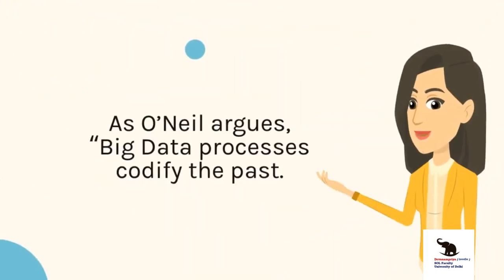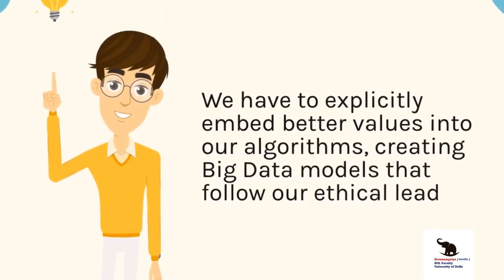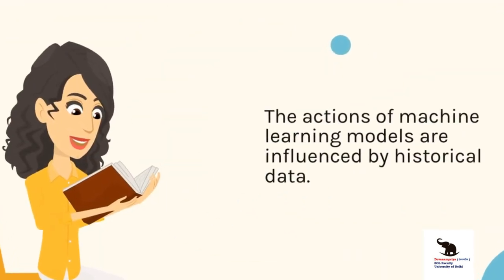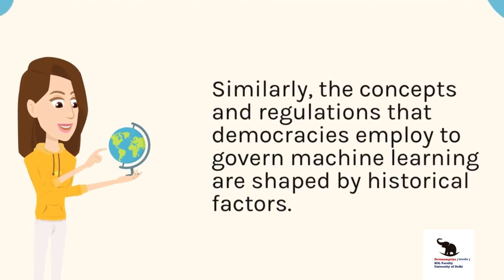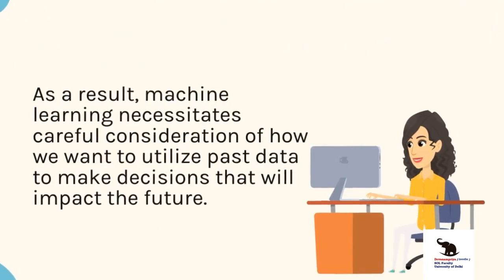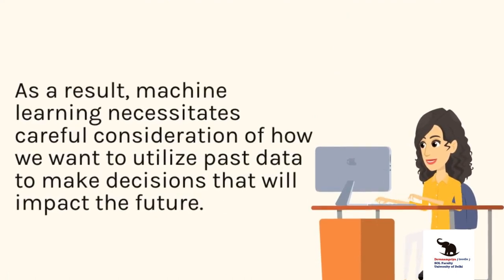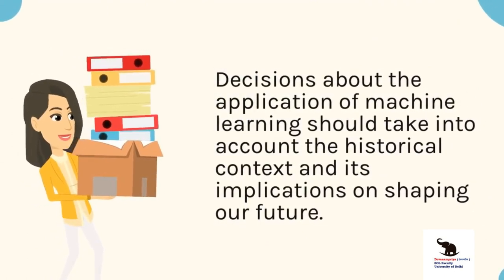As O'Neill argues, big data processes codify the past — they do not invent the future. Doing that requires moral imagination, and that's something only humans can provide. We have to explicitly embed better values into our algorithms, creating big data models that follow our ethical lead. The actions of machine learning models are influenced by historical data, and similarly, the concepts and regulations that democracies employ to govern machine learning are shaped by historical factors. As a result, machine learning necessitates careful consideration of how we want to utilize past data to make decisions that will impact the future.